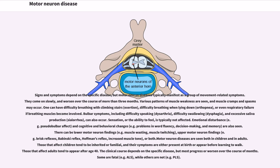Bulbar symptoms, including difficulty speaking, dysarthria, difficulty swallowing, dysphagia, and excessive salivate production, sialorrhea, can also occur. Sensation, or the ability to feel, is typically not affected. Emotional disturbance, for example pseudobulbar affect, and cognitive and behavioral changes, for example problems in word fluency, decision making, and memory, are also seen.